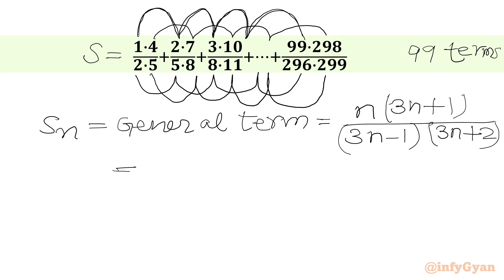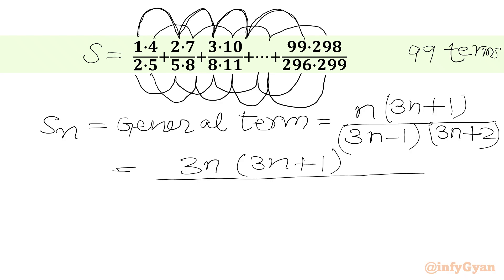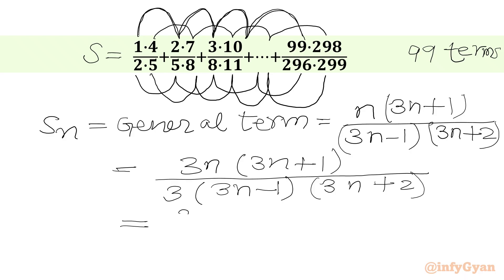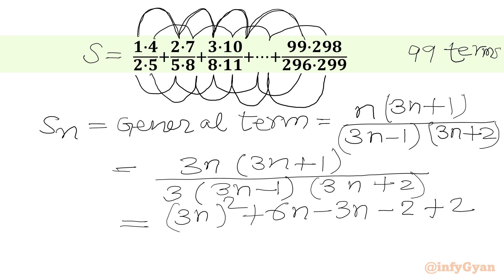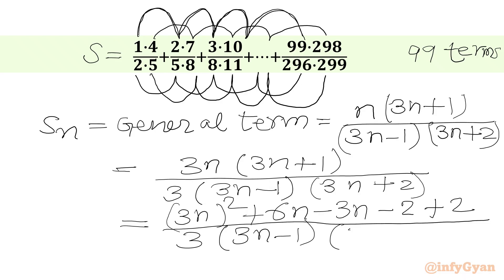This is our general term of the given sum series. I will multiply 3 in the numerator, so I can write 3N times 3N plus 1. I have to divide by 3 in the denominator, so we write 3N minus 1 times 3N plus 2. Multiplying out 3N plus 1, we get 3N whole squared, then 6N minus 3N minus 3N, then minus 2, so we add 2 in the numerator. The denominator remains unchanged: 3 times (3N minus 1) times (3N plus 2).